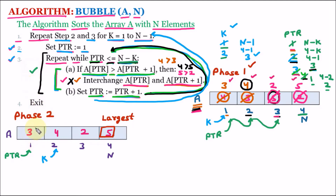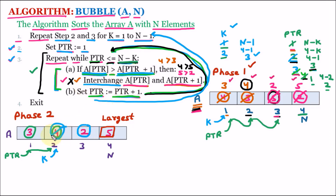Just like phase 1, the inner loop runs and checks A[PTR] against A[PTR+1]. We can see that 3 is not greater than 4, so PTR moves to the next position — PTR becomes 2. Now 4 is compared with 2, and since 4 is greater than 2 we need to interchange. So 4 and 2 swap positions. PTR is then incremented to 3, but PTR can only go till 2, so the condition is false and the inner loop completes. Pass 2 is done.